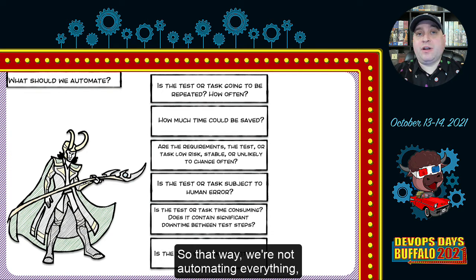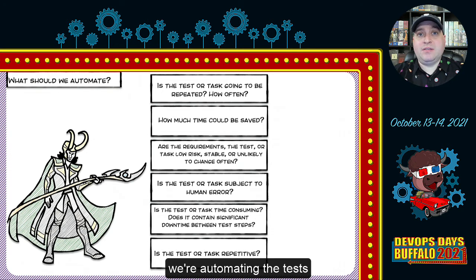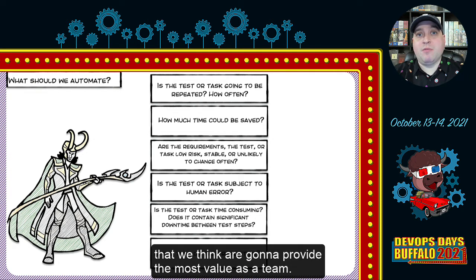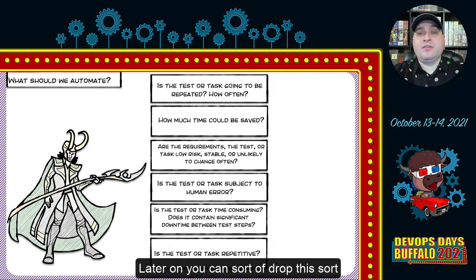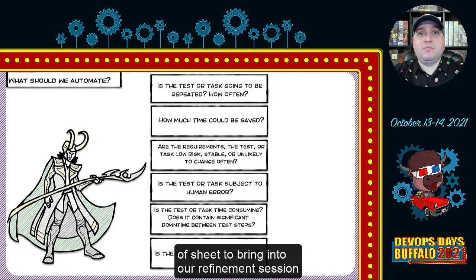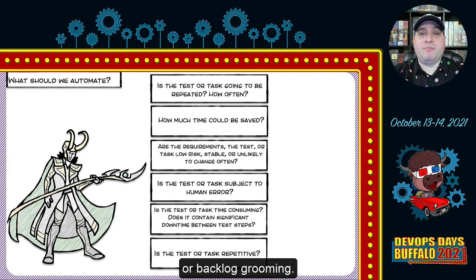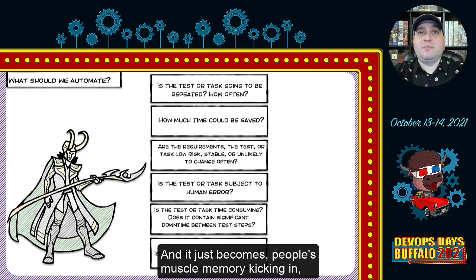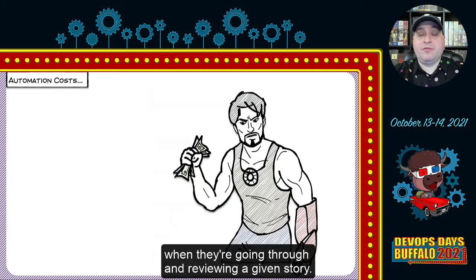The purpose of this checklist as an upfront is to get people thinking along the same lines — is this actually a good candidate for us to automate? That way we're not automating everything; we're automating the tests that we think are going to provide the most value as a team. Later on, it just becomes muscle memory when people are going through and reviewing a given story.